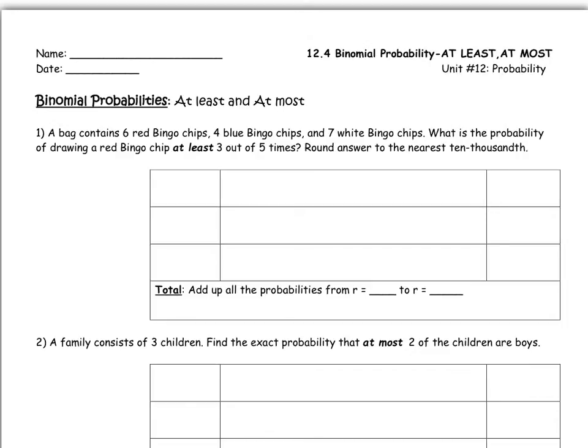Just a review, we would do binom pdf n, p, r. Now that binom pdf button is found second vars, which is right next to the stat button, second vars zero. And that's our shortcut for the formula. The only way we can do these problems is by example. So let's do example number one.